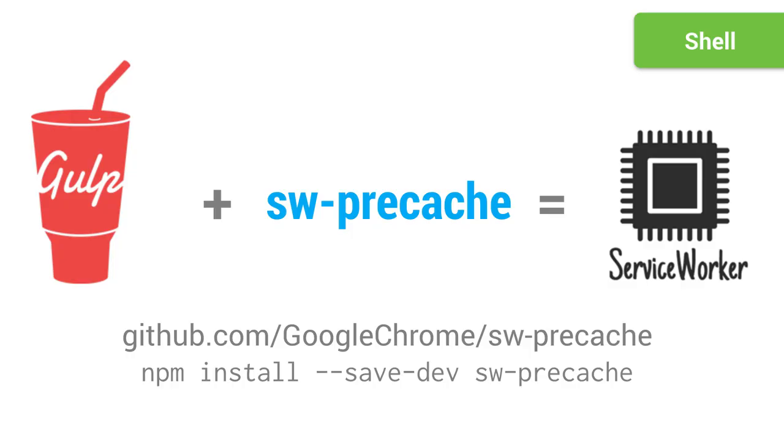For that pre-caching step, there is Service Worker Precache. Basically what it is, is a build-time step, and all it does is let you do two things with it.